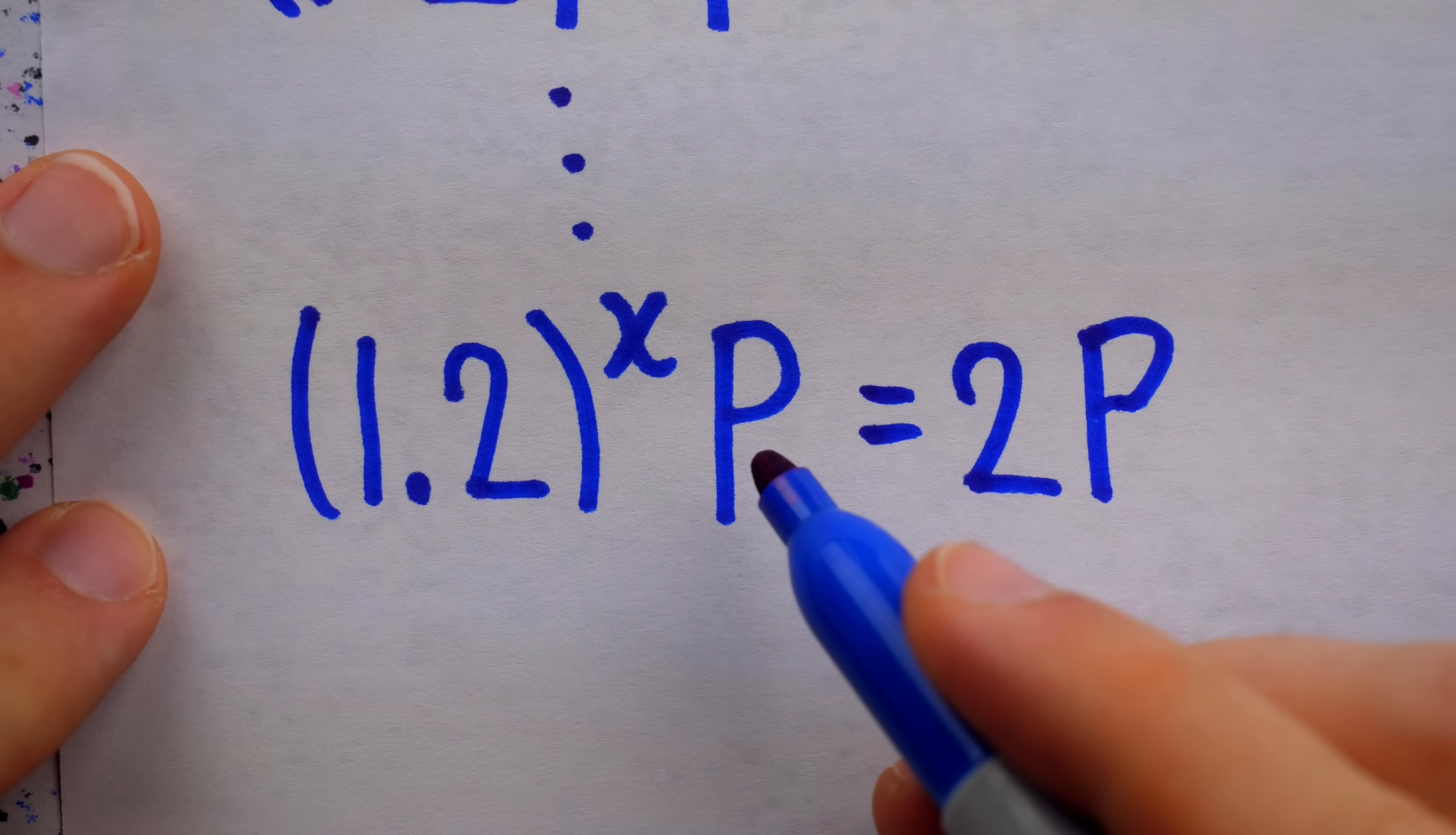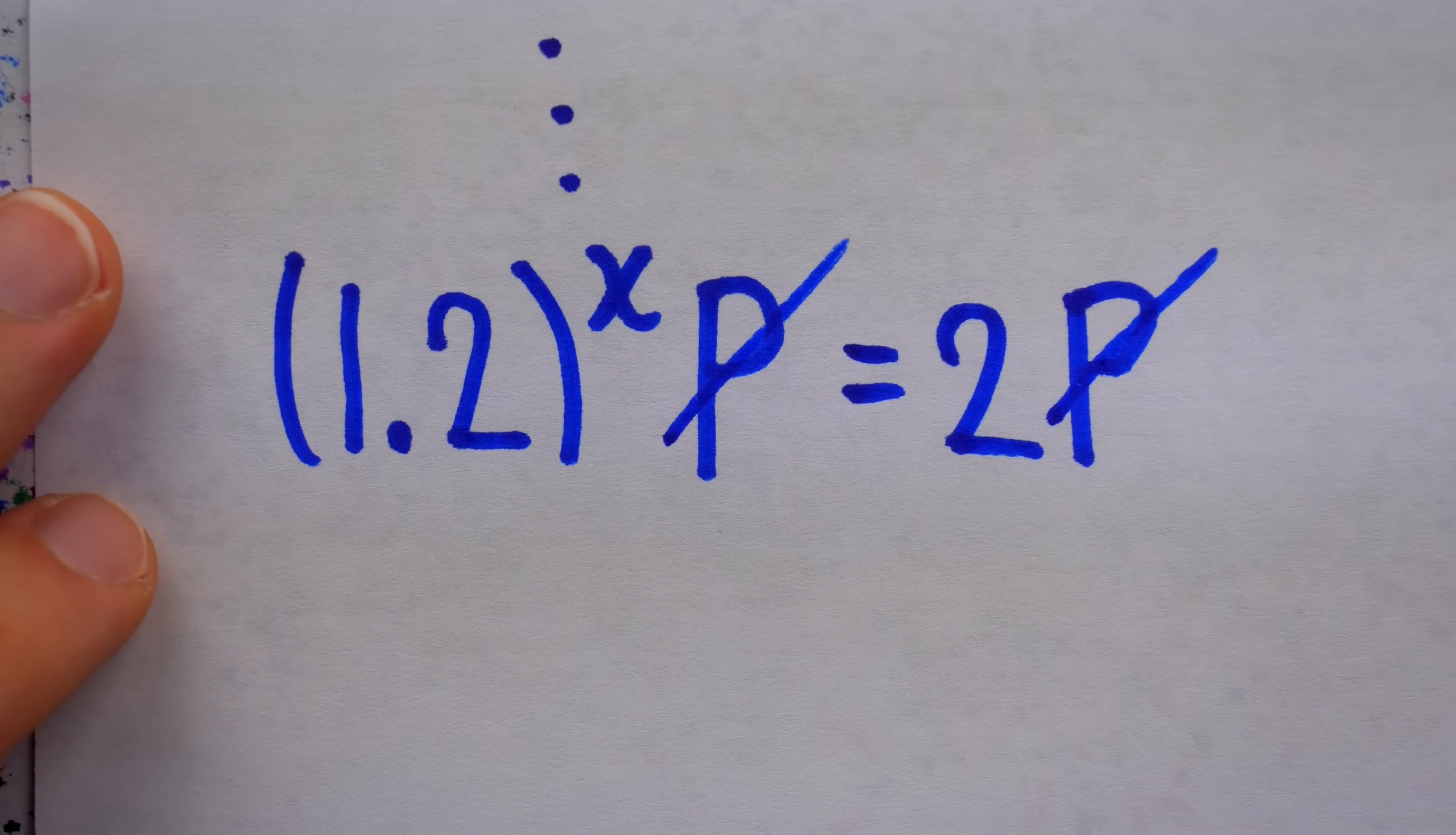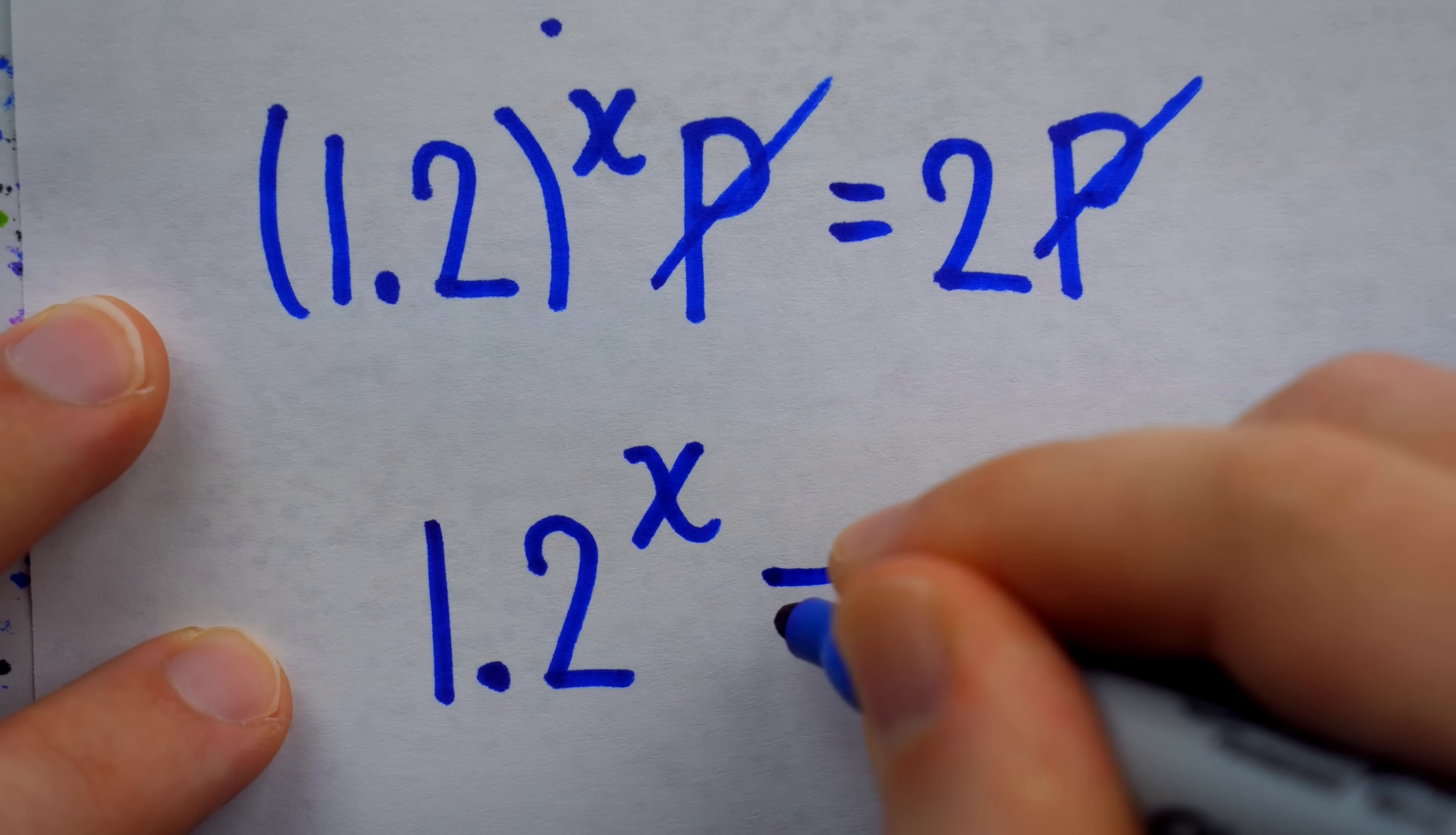It's no surprise that at this step, we can cancel the p's from both sides, because the initial sum doesn't affect the relative growth rate. And so we are left with this equation to solve. 1.2 to the power of x equals 2.